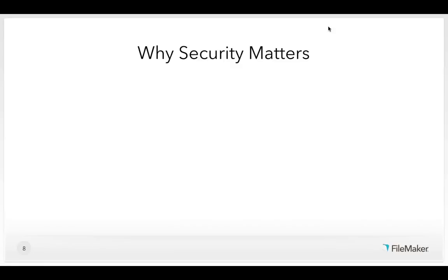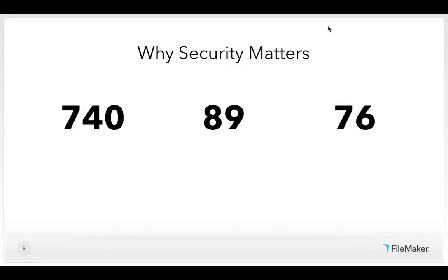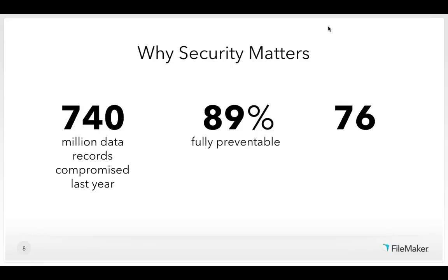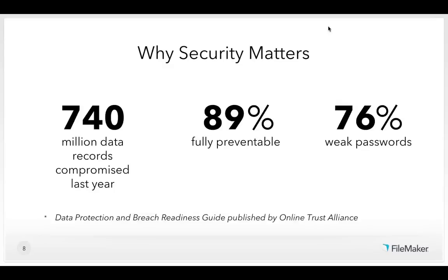First, let's talk about why security matters. I have some numbers: 740, 89, and 76. A recent study found that there were 740 million data records compromised last year. 89% of those breaches were fully preventable, and 76% of those were caused by weak or compromised passwords. That's from the Data Protection and Breach Readiness Guide published by the Online Trust Alliance, and you can download the full report from their website.